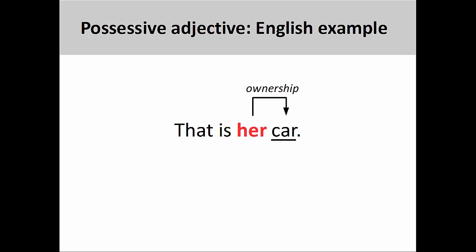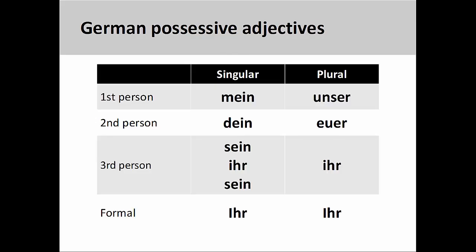German possessive adjectives function in much the same way, although with important differences we need to be aware of. Let's take a look at them now. Like English, possessive adjectives in German are organized by number, person, and gender.